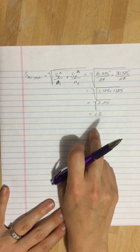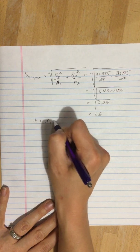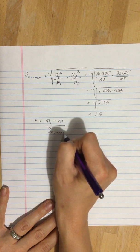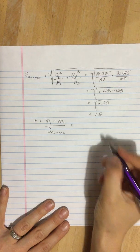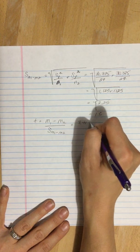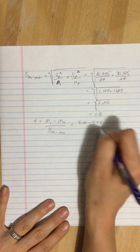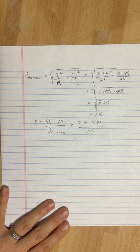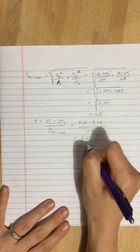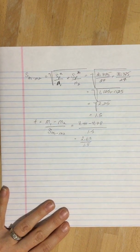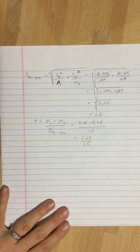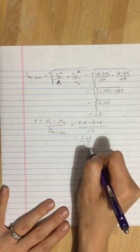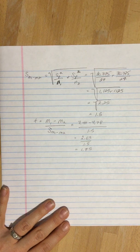Now we can plug this into our t-test. So t is equal to m1 minus m2 divided by the estimated standard error. Now the mean of group 1 was 7.41, mean of group 2 was 4.78, divided by 1.5. Got 2.63 divided by 1.5. Sorry for the shaking, that's the cat. So this is equal to 1.75.